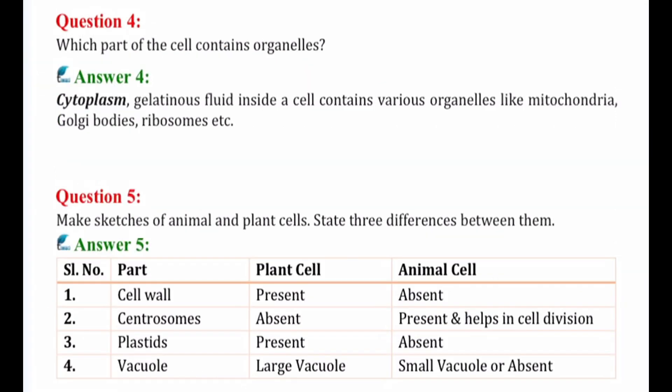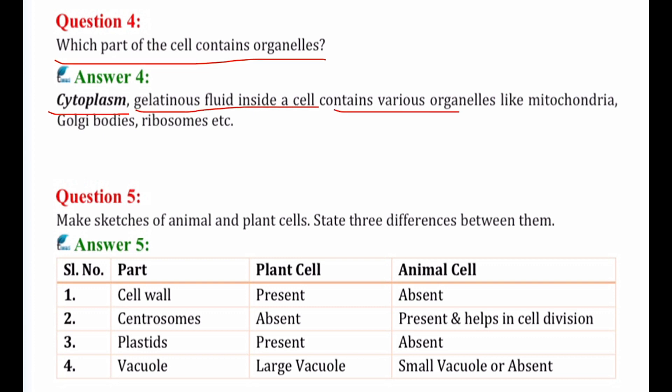Question number 4: which part of the cell contains organelles or components present in the cell? The answer is cytoplasm. Cytoplasm is a gelatinous fluid inside a cell that contains various organelles like mitochondria, Golgi bodies, ribosomes, etc.